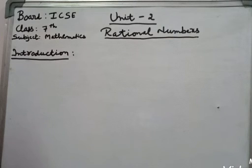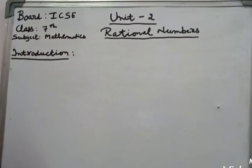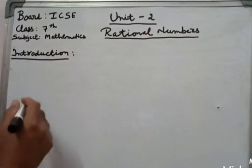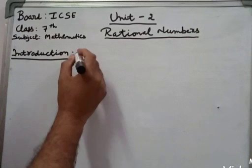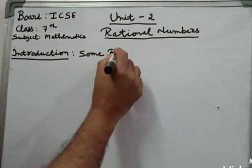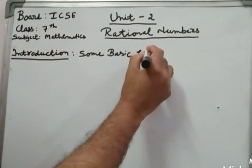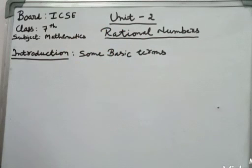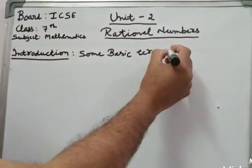Welcome students to our academy of education. Today we will start mathematics of class seventh, ICSE board, Unit 2: Rational Numbers. Before the introduction to rational numbers, you should know some basic terms to understand rational numbers. These terms you might have studied in earlier classes.